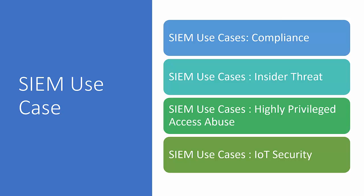The third use case is high privileged access abuse. Privileged access abuse is a complex problem stemming from gaps in access control — users with access to IT systems can perform undesirable actions because they have elevated rights. SIEM monitors this. According to the Verizon report, privileged access abuse was the third largest cause of data breaches and the second largest cause of security incidents.